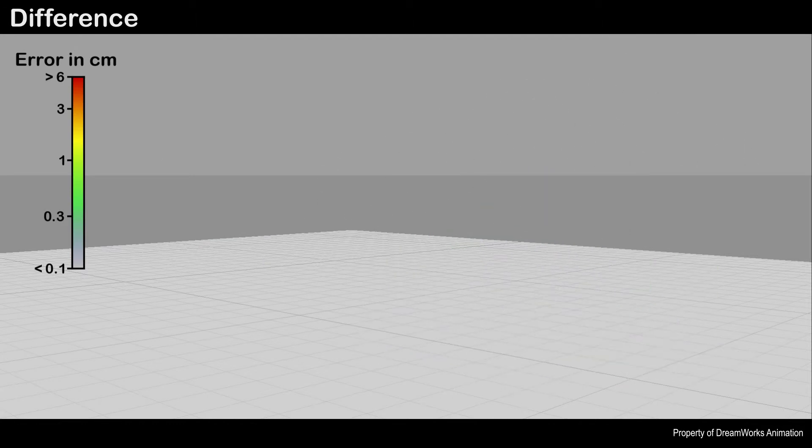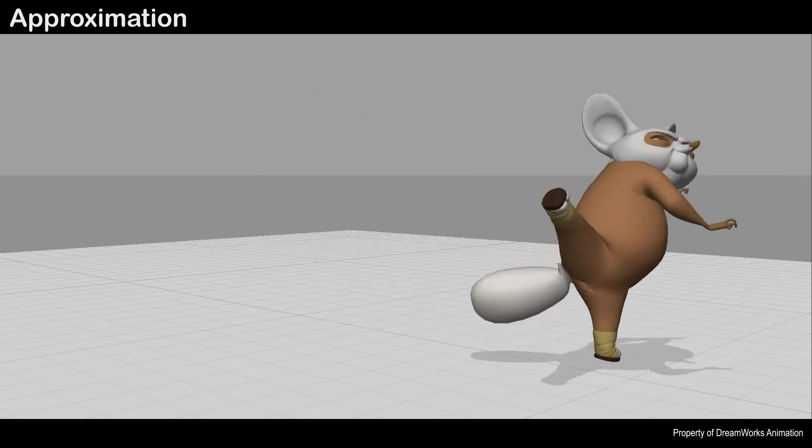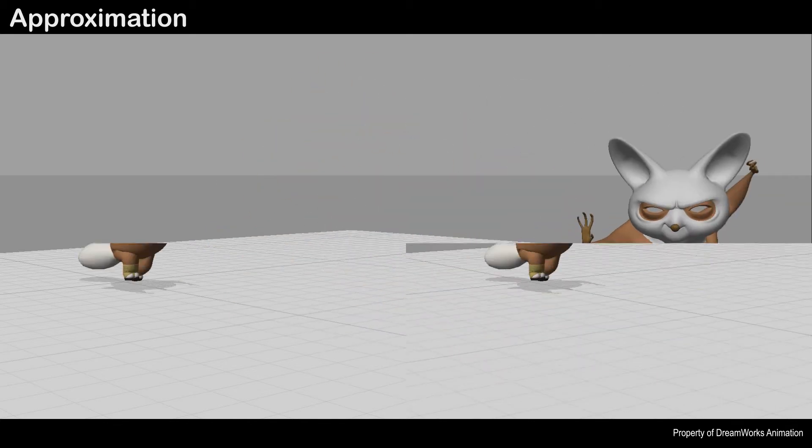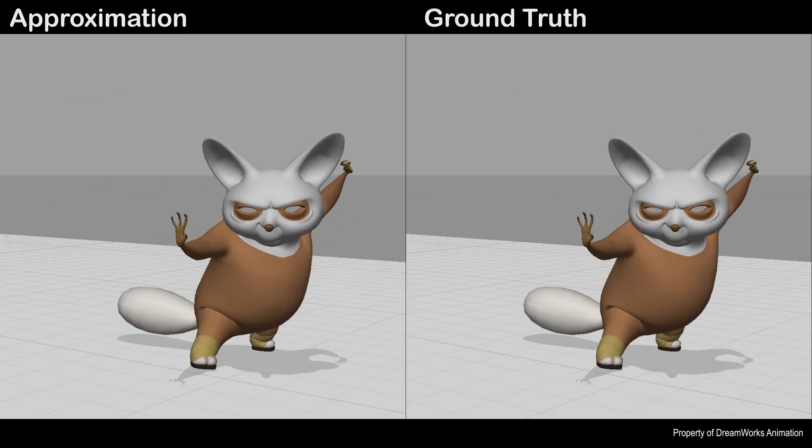The error relative to the scale of the characters remains small throughout the sequence. The largest error occurs in the legs during kicking motions, but even these errors do not have a significant visual impact on the character's appearance.